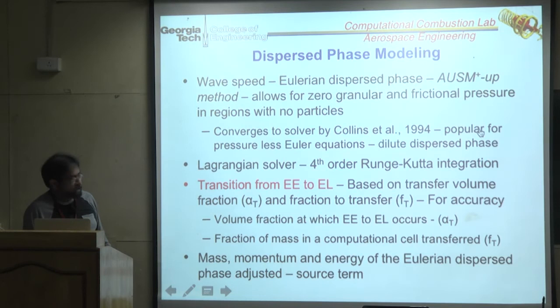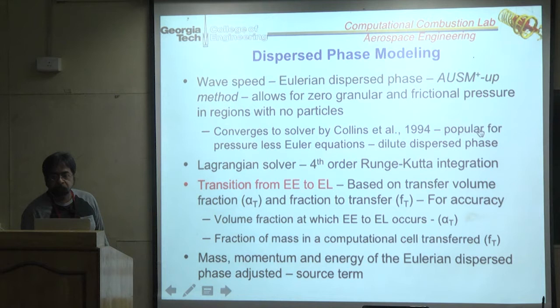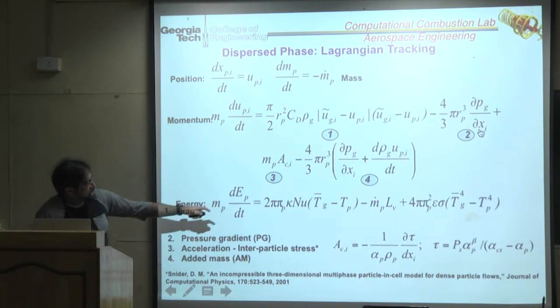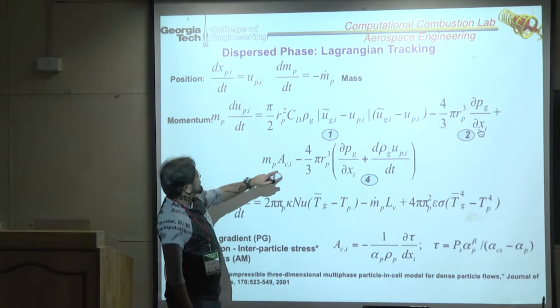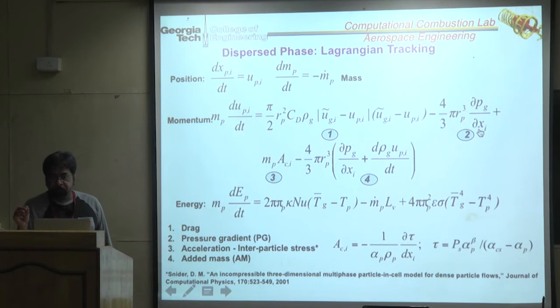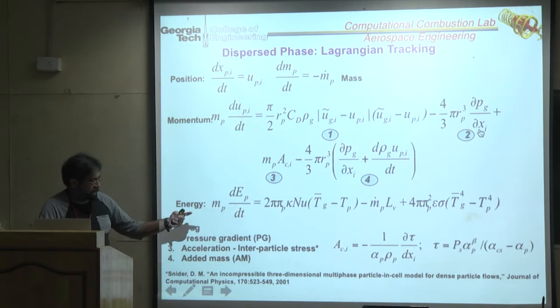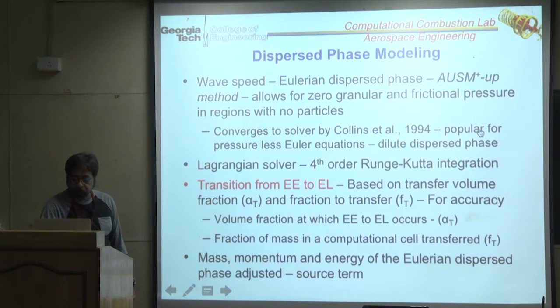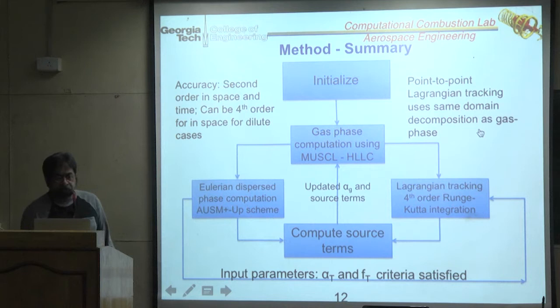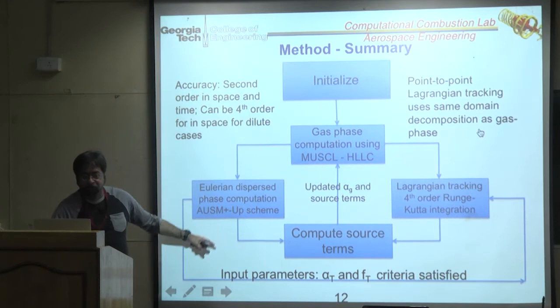There are collision terms appearing as source terms on the right-hand side, based on point-particle approximations rather than full generalized collisions. Many of these models are available from the literature. One issue encountered: the MUSCLE-HLLC scheme had numerical problems with the non-conservative Eulerian-Eulerian equations.